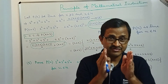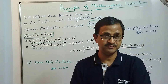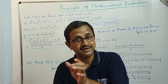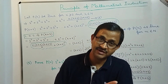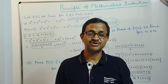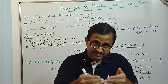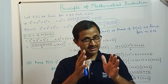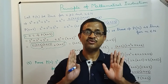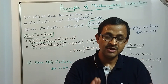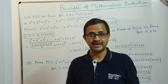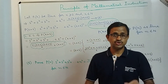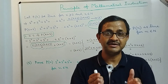So the steps to follow are: first prove P(1) is true, then assume P(k) is true for k ≥ 2 and k ∈ ℕ, and with that assumption prove P(k+1) is true. Once done, you can say with full confidence that P(n) is true for all natural numbers n.